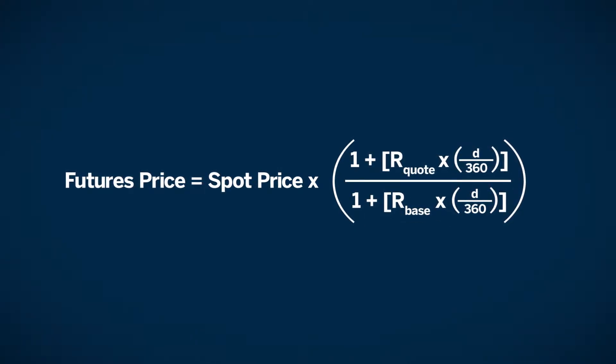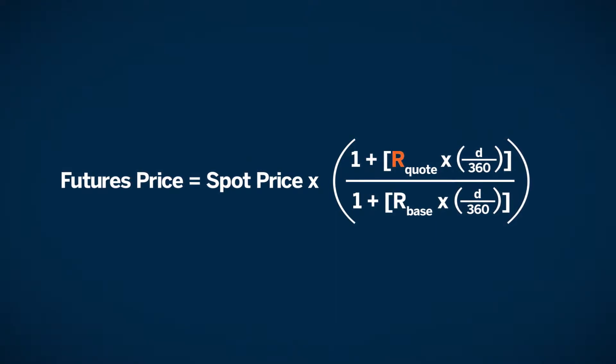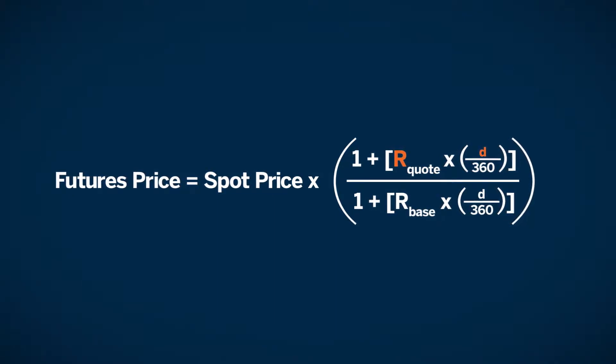What does the pricing formula look like? In the FX futures price formula, R represents the short-term interest rate of a currency, and D is the number of days from trade settlement until expiration.